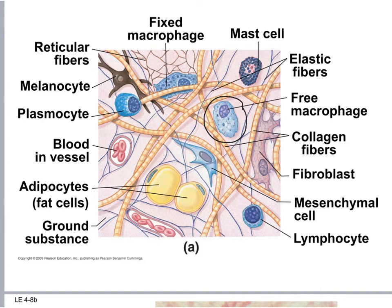The first cell is a macrophage. The macrophage can be either fixed or free — if free, it's floating in the matrix; if fixed, it's attached to the protein fibers. Macro means big, phage means phagocytic, so its job is to engulf things, like bacteria. The macrophage is a phagocytic cell.